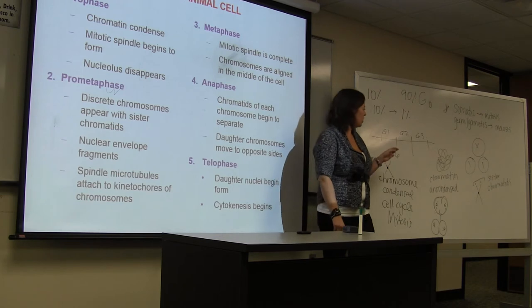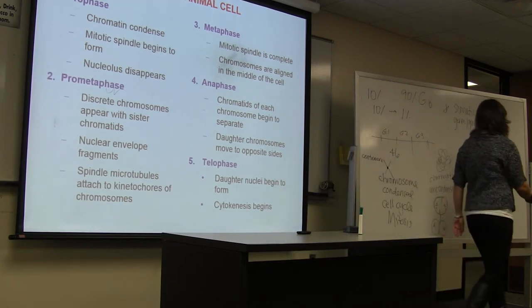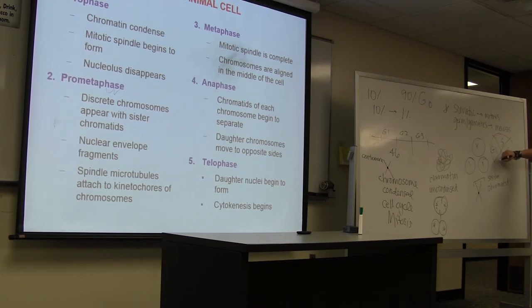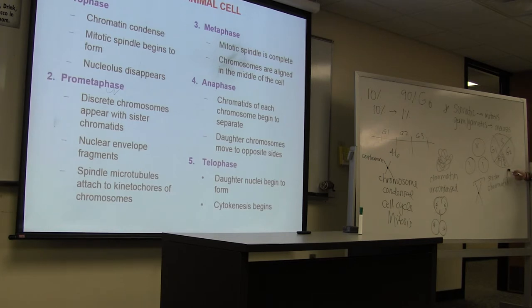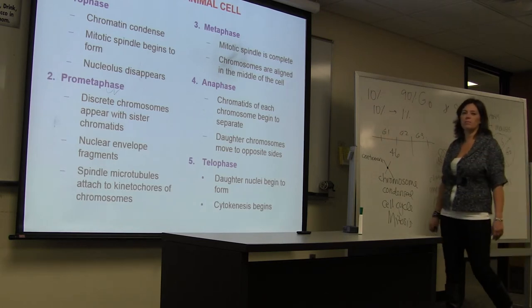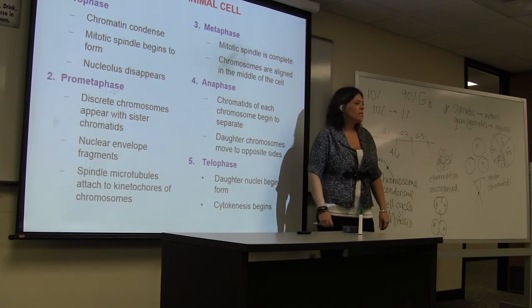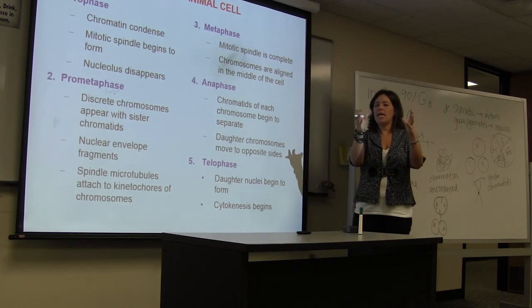Once your cell enters mitosis — here's my cell cycle: G1, S, G2, and then mitosis and cytokinesis — once a cell has replicated its DNA in S phase and gone through G2, now it's ready to go into mitosis. Mitosis is divided into five steps. The first one is called prophase. Prophase is where all your chromatin — all your loosey-goosey DNA — is going to condense.